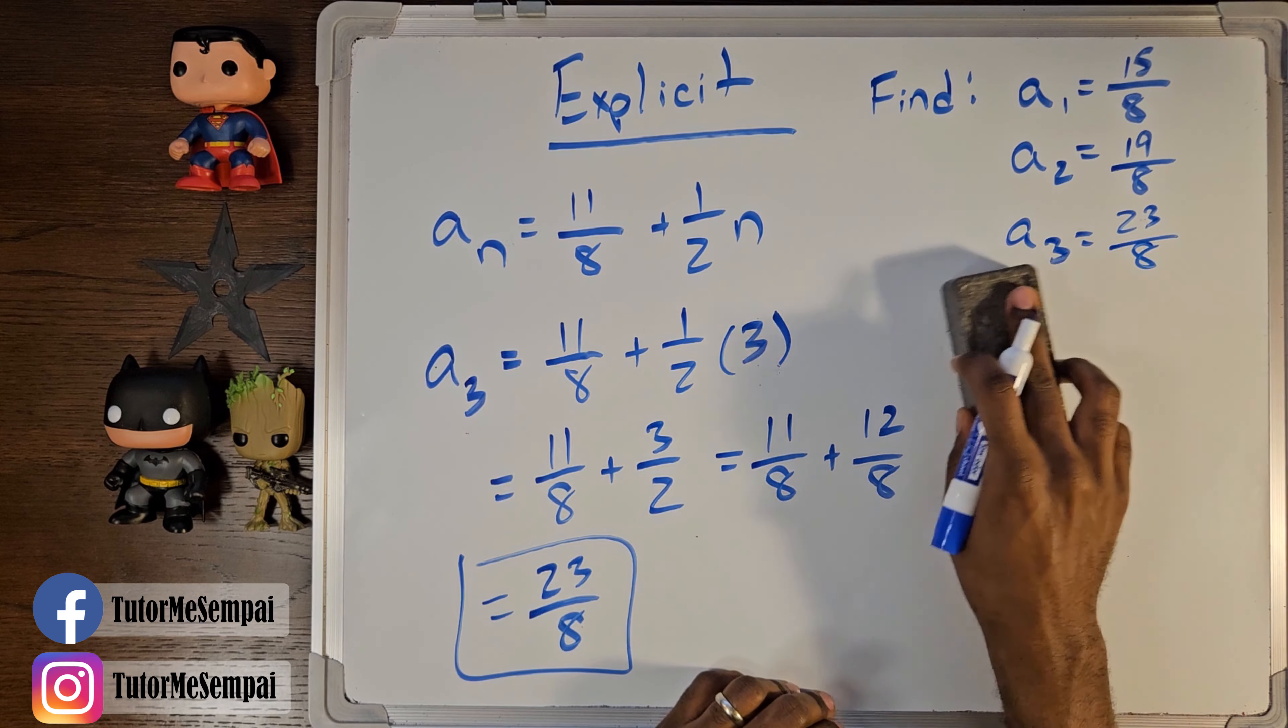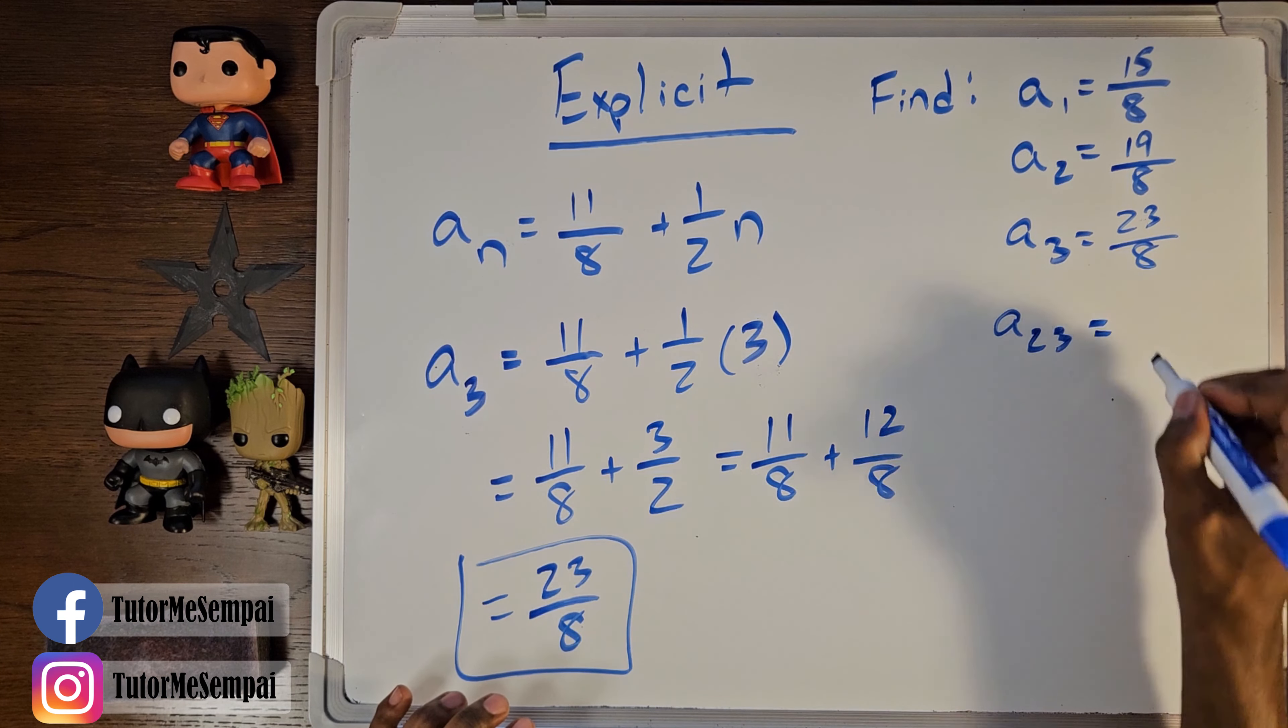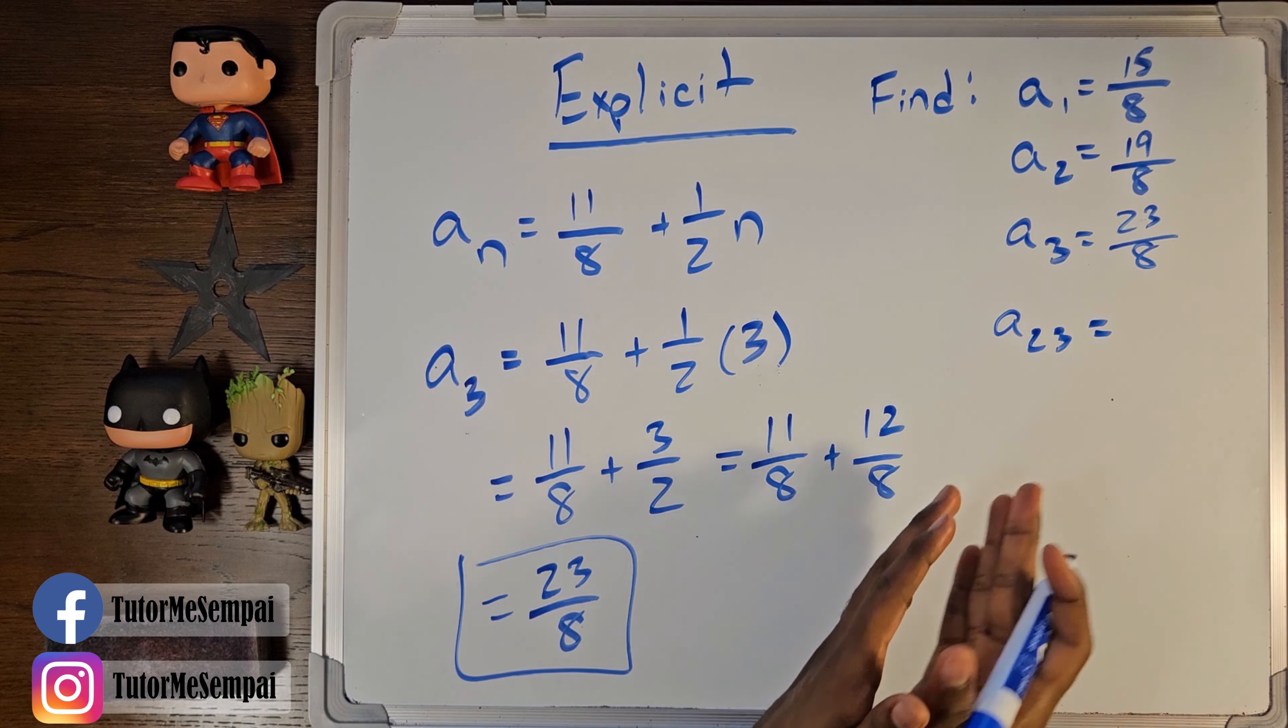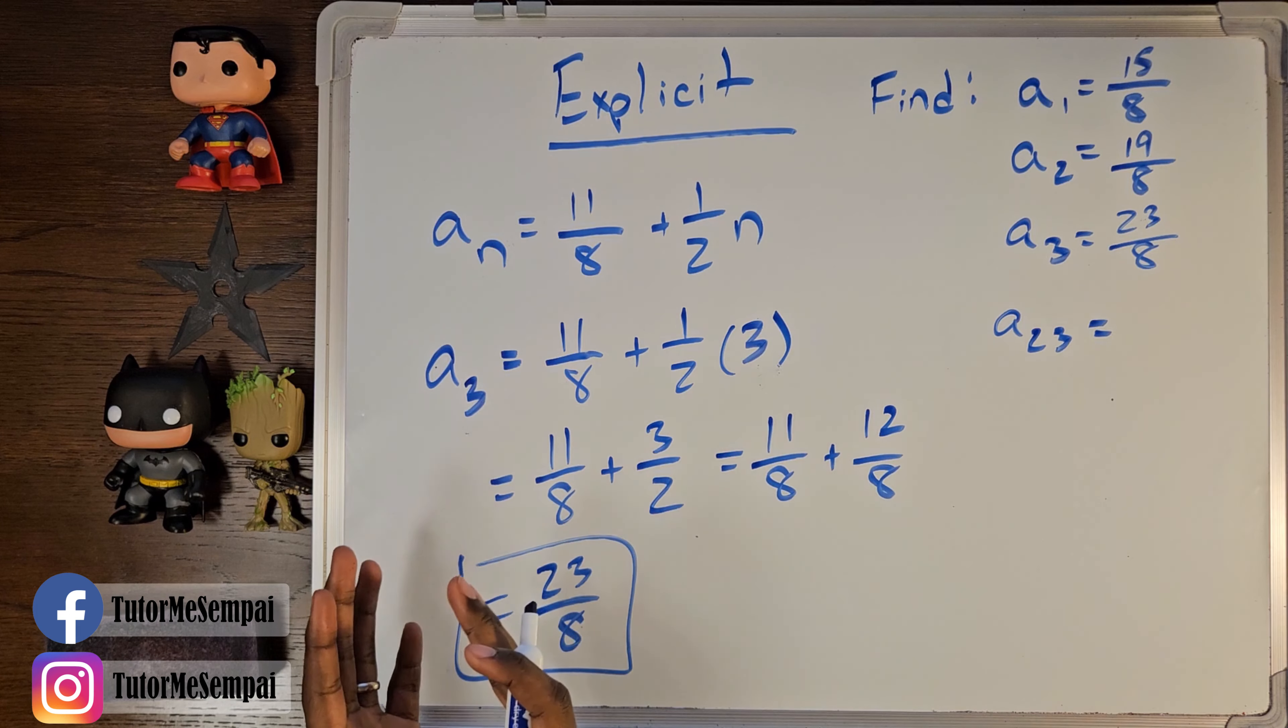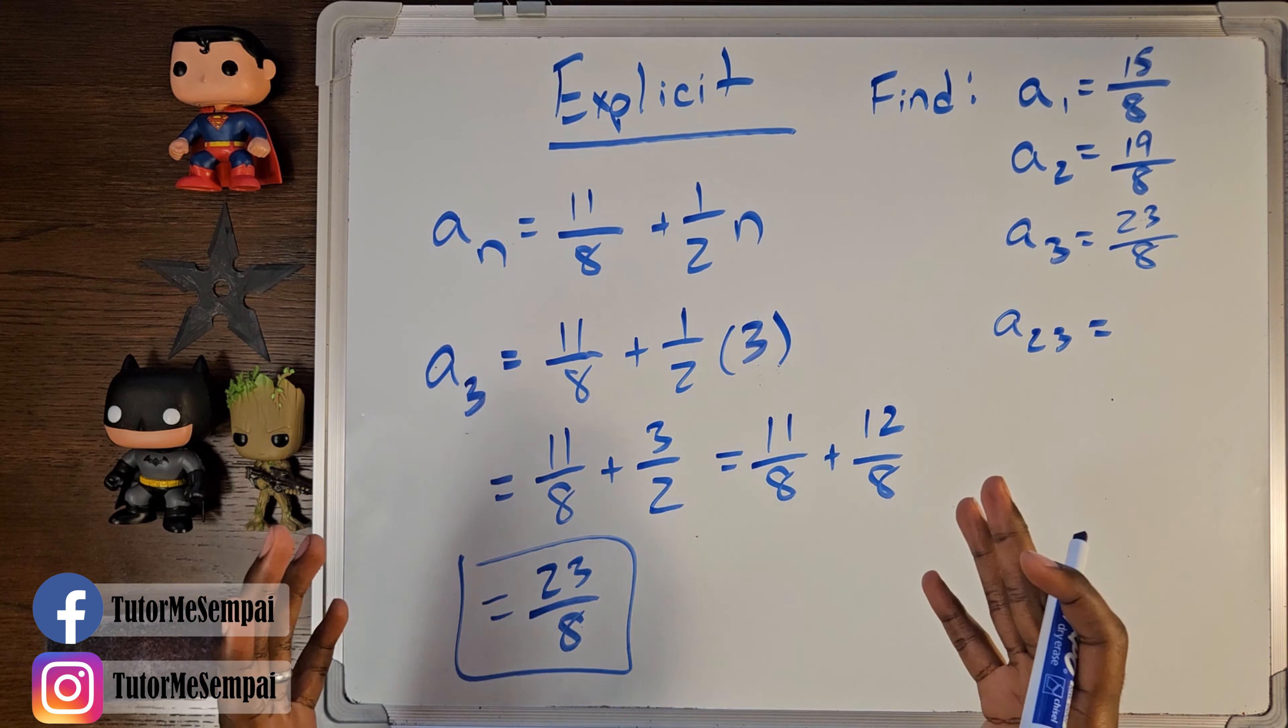So, our a sub 3 is going to be 23 over 8. Now we have our a sub 23. What is our a sub 23? Why is there a big jump here? We have a jump because we can. Our explicit formula is designed to find any term. We don't have to go in order. Yes, we did go in order here, but we don't have to. And we want to just drive that point home with having an a sub n that is way out there compared to our first three terms.